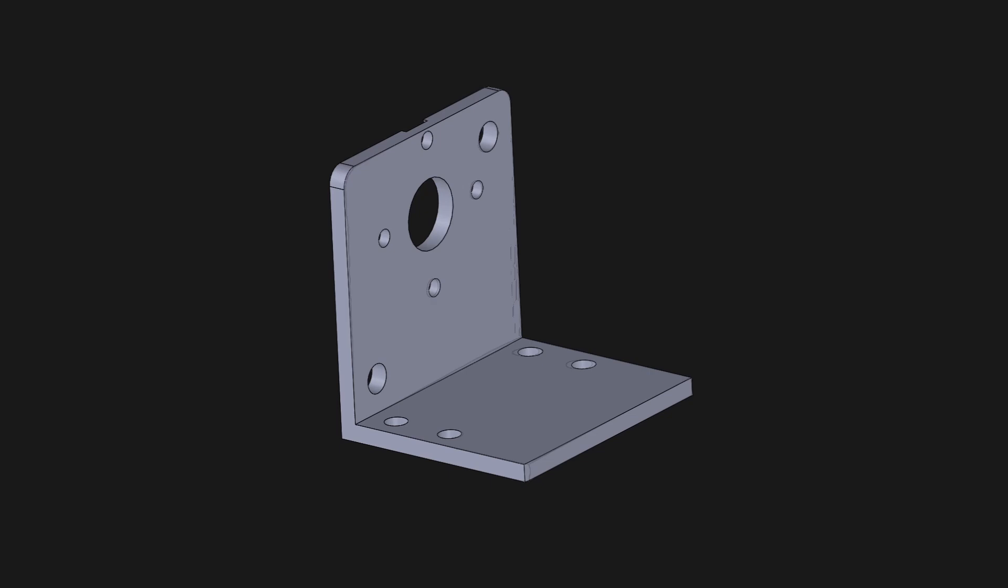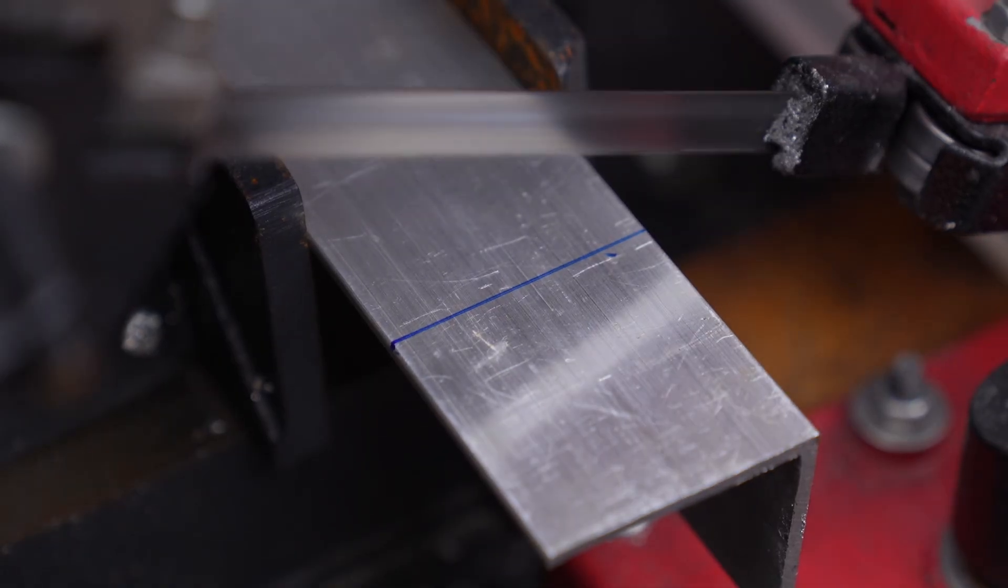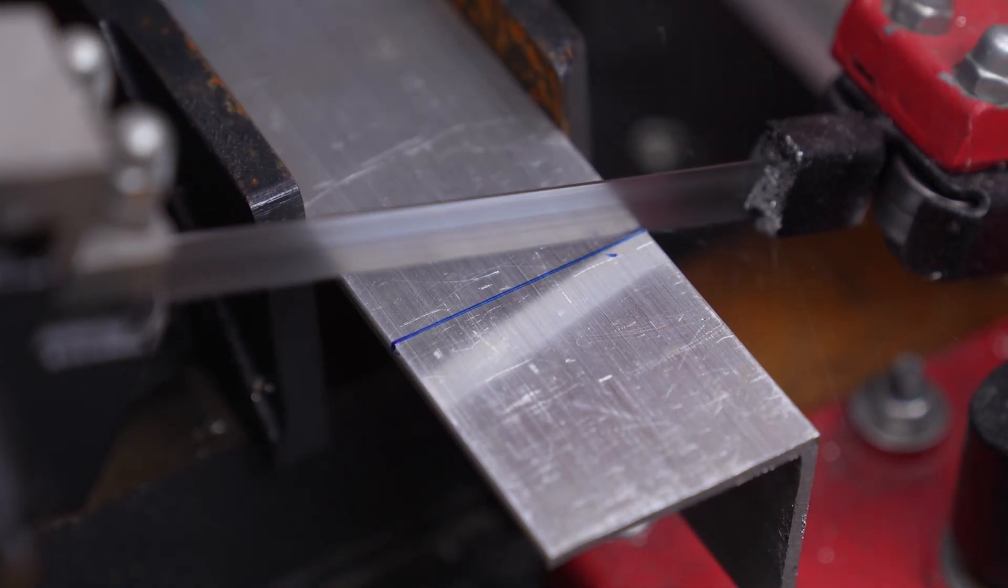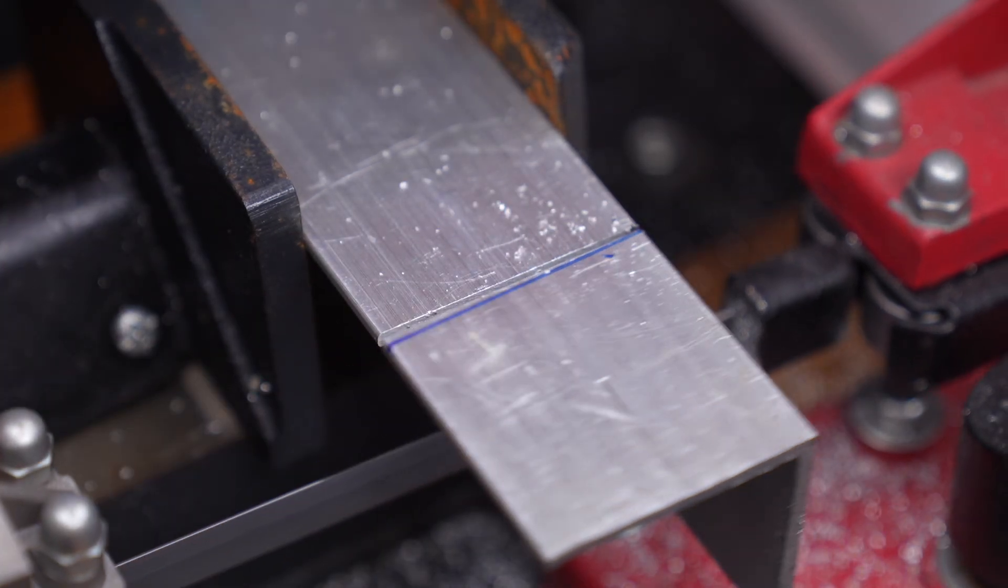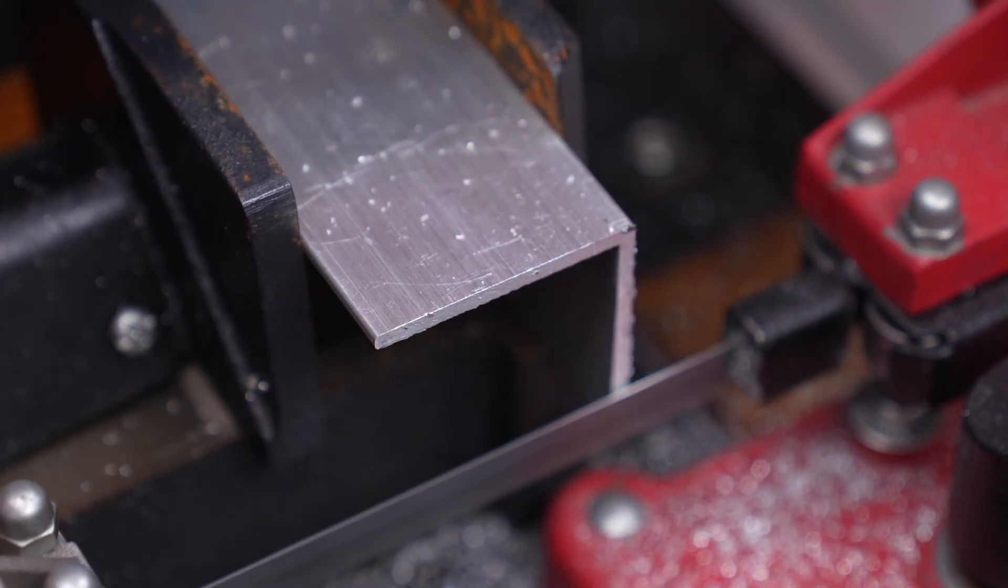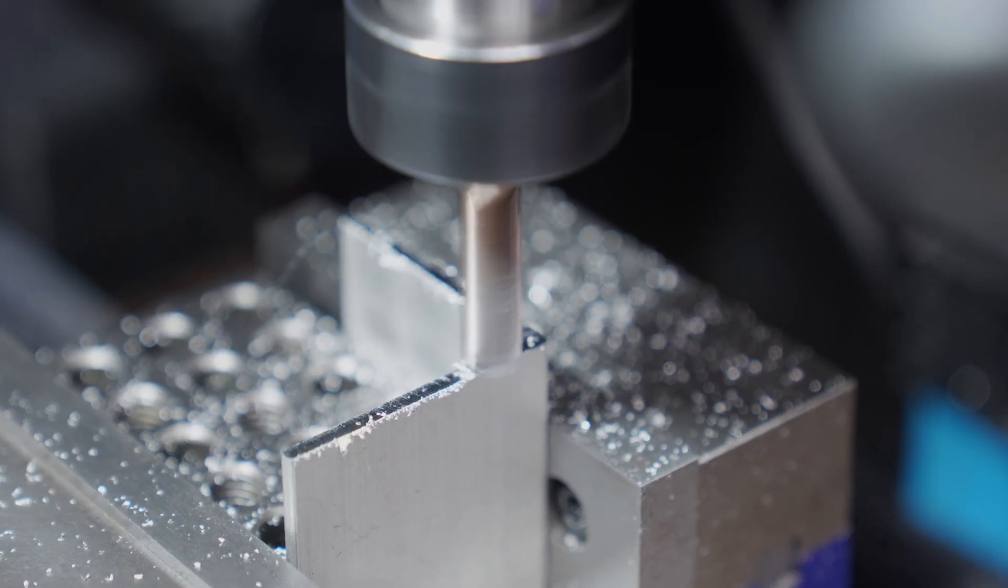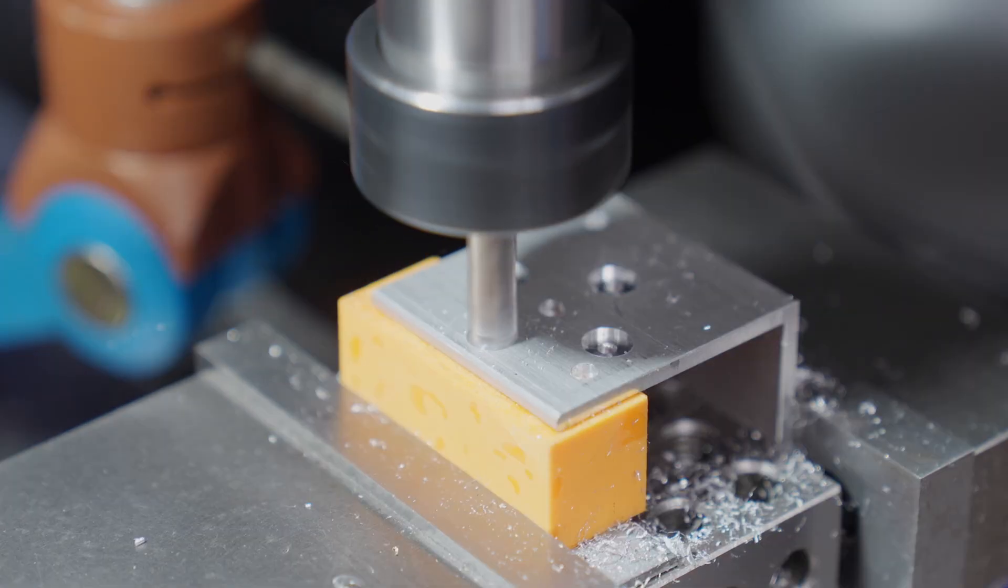Finally, I'll machine the motor mount. The raw material is a 50mm side, 3mm thick aluminum angle. The process is simple, so I won't go into details here.